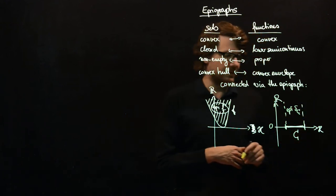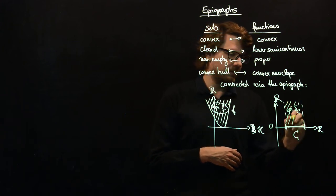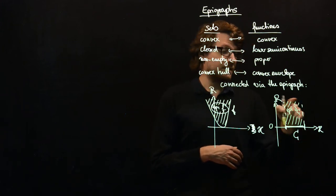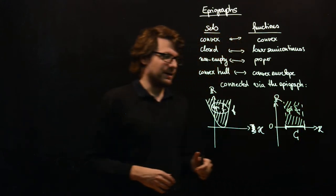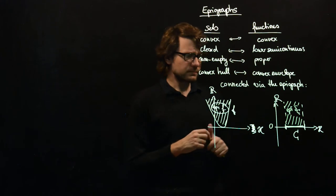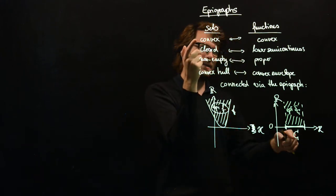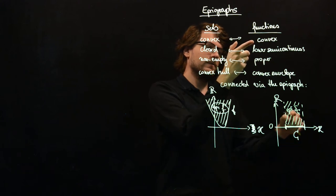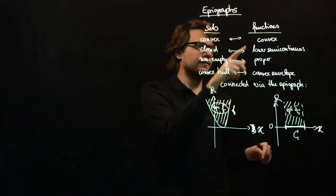and everything else is not visible in this picture. So if you take the indicator function of C and you take its epigraph, then it's this thing here. And here you have the same thing. Whenever the set C is convex, then the epigraph of, then this indicator function is convex.